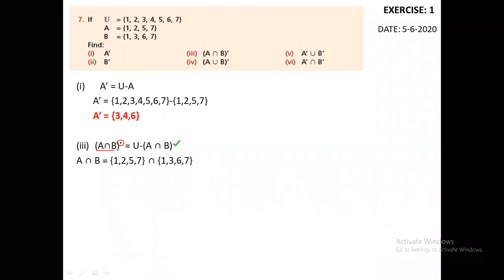A intersection B means all the elements common between A and B. A = {1, 2, 5, 7} intersection B = {1, 3, 6, 7}. So A intersection B equals {1, 7}.